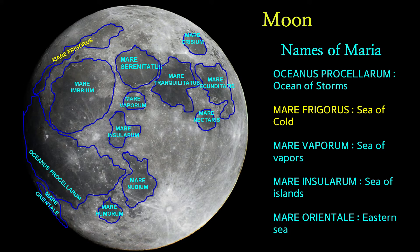Mare Frigoris is a lunar mare in the far north of the Moon. It is located in the outer ring of Procellarum. Mare Frigoris means Sea of Cold. Mare Vaporum is a lunar mare located between the southwest rim of Mare Serenitatis and the southeast rim of Mare Imbrium. Mare Vaporum means Sea of Vapors.